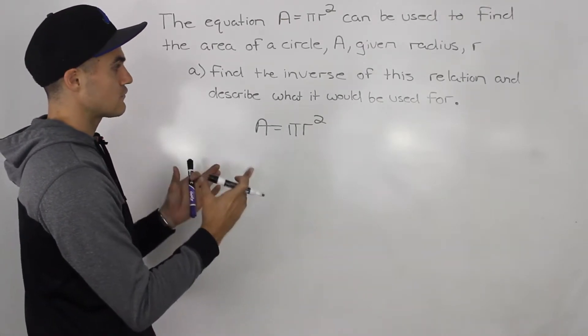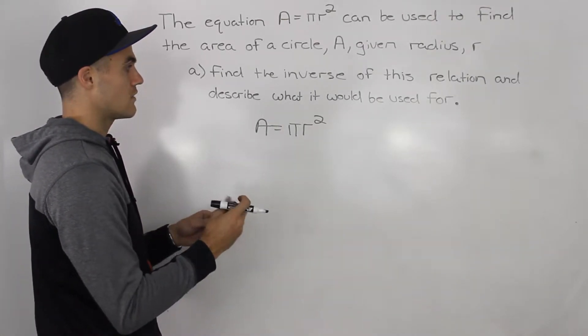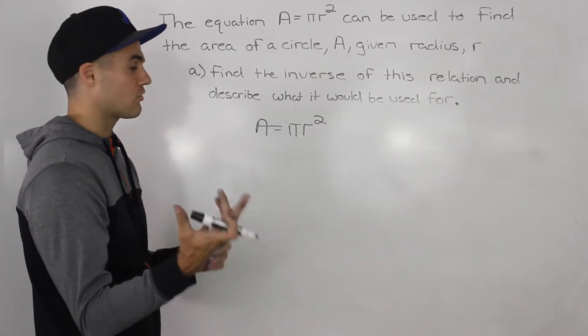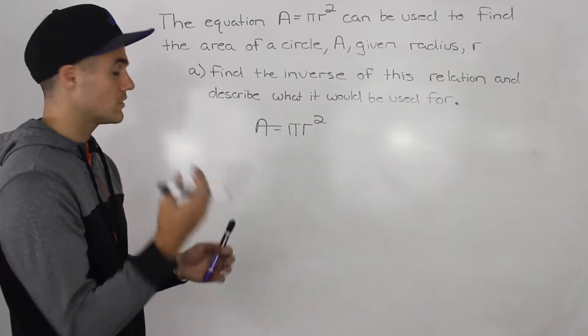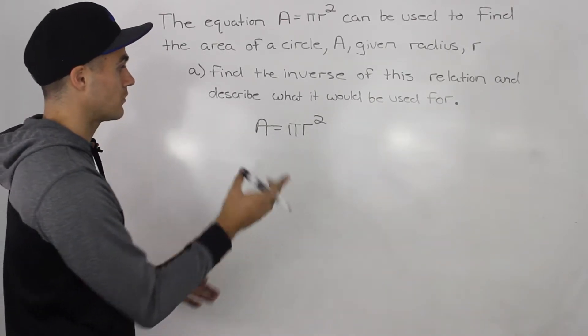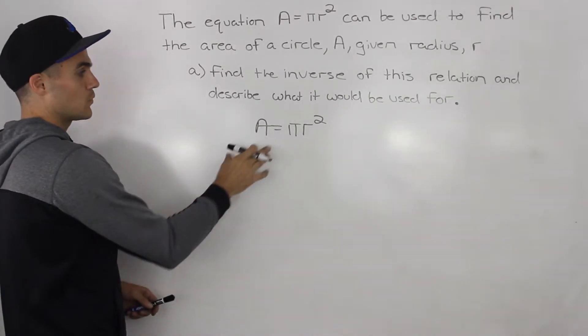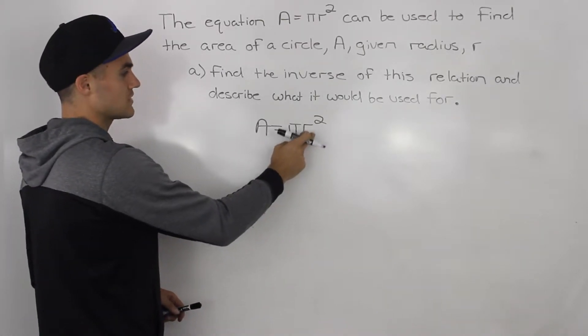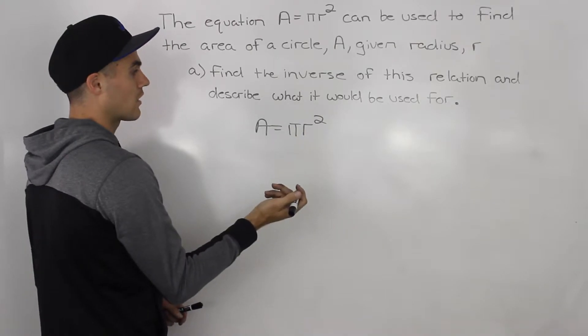So when we find the inverse of a function that is actually representing physical things or a word problem, representing things in a word problem, like in this case, we keep the variables as they are, but we would just isolate for that other variable. So in this case, we're just going to isolate for the r.